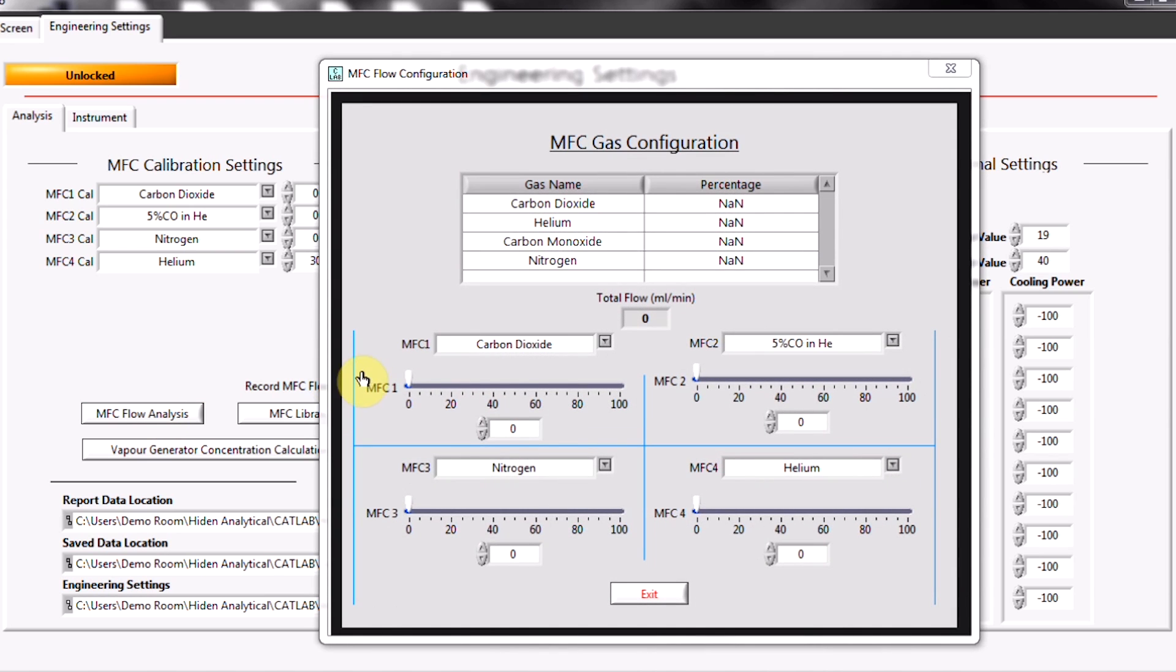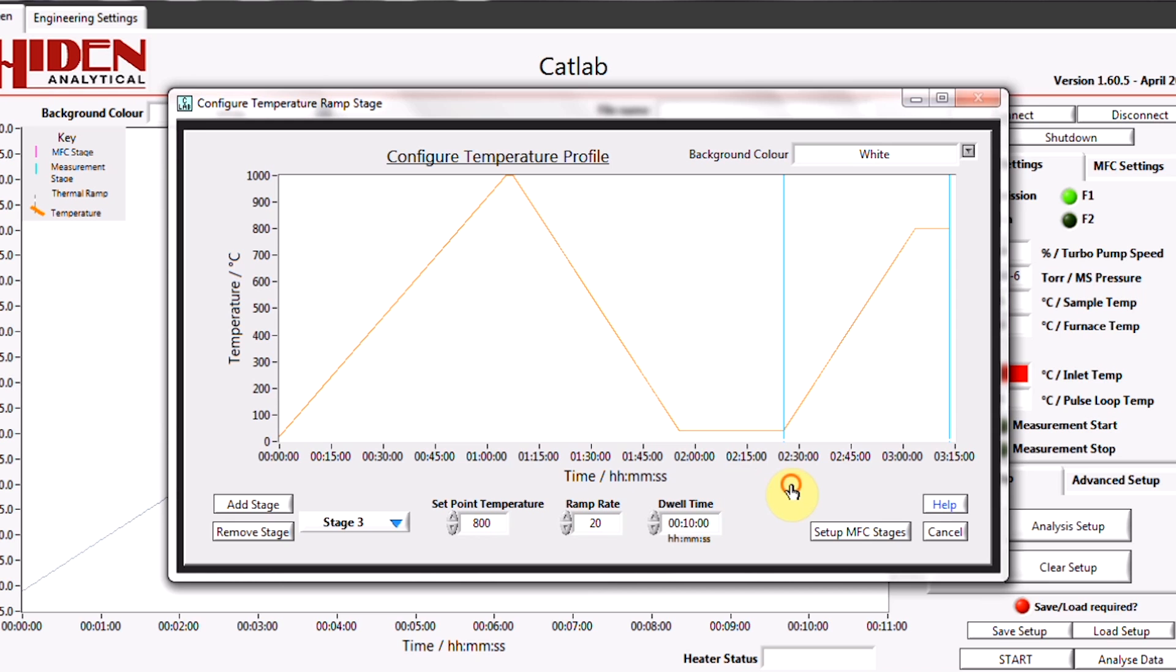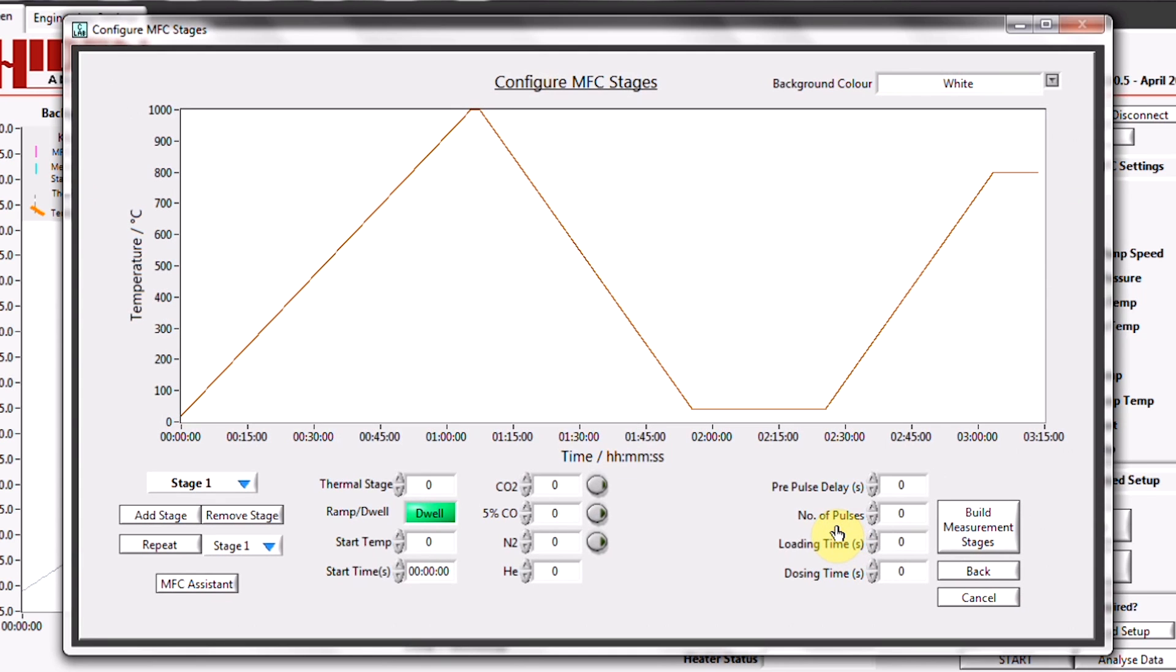All system control parameters including gas flow, temperature control and mass spectrometer settings are integrated in the CATLAB software package.